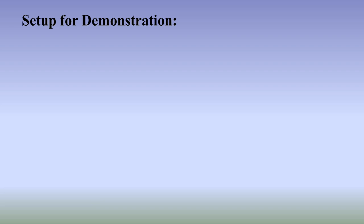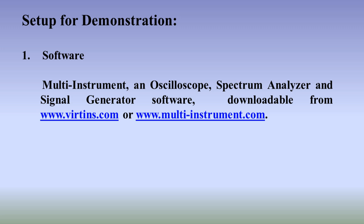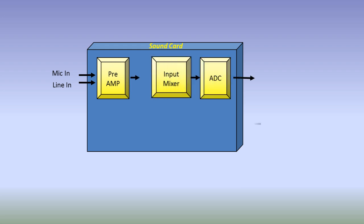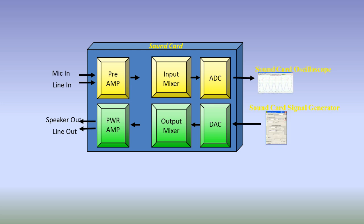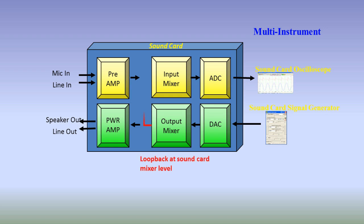We are going to use the Multi-Instrument software to demonstrate the autocorrelation functions of some typical waveforms, and then explain how to use cross-correlation to measure the time delay. The software can be downloaded at www.virtins.com or www.multi-instrument.com. We will use its oscilloscope, spectrum analyzer, and signal generator functions. The hardware is a computer with a sound card, with the signal generator connected to the oscilloscope through a loopback at the sound card mixer level without any external physical connection.